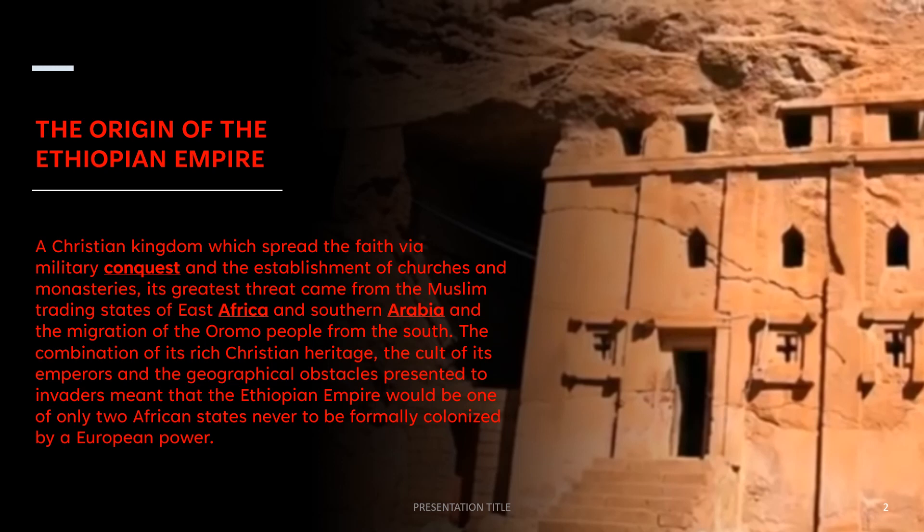The Origin of the Ethiopian Empire. It was a Christian kingdom which spread the faith via military conquest and the establishment of churches and monasteries. The greatest threats came from the Muslim trading states of East Africa and southern Arabia, and from the migration of the Oromo people from the south. The combination of its rich Christian heritage, the cult of its emperors, and the geographical obstacles presented to invaders meant the Ethiopian empire would be one of the two African states never to be formally colonized by a European power.